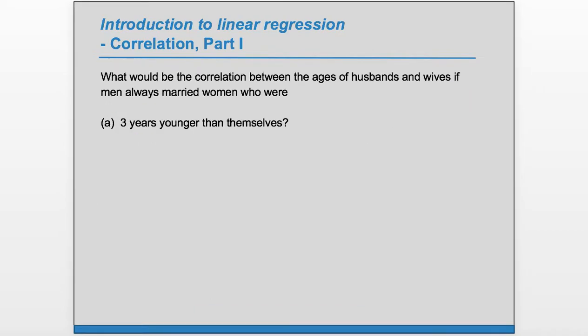What would be the correlation between the ages of husbands and wives if men always married women who were (a) three years younger than themselves?